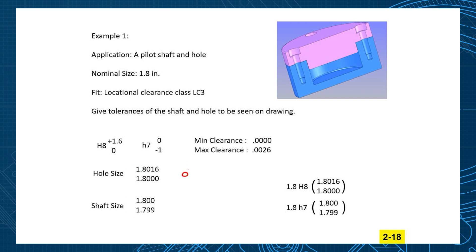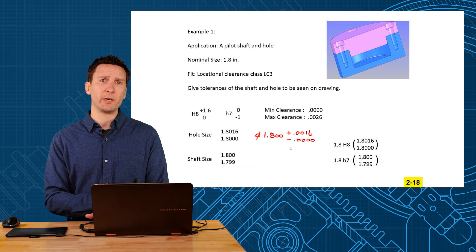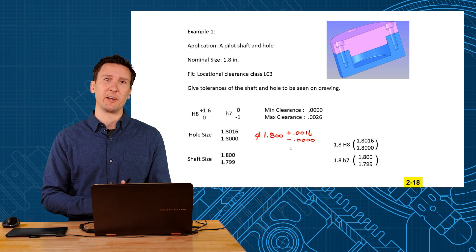Another way you might see them is you'd say a diameter of 1.8 and then you'll have plus zero, zero, one, six and minus zero, zero, zero, zero. There you have it. You put those numbers on your drawing and you'll have a guaranteed performance of an LC3 fit.